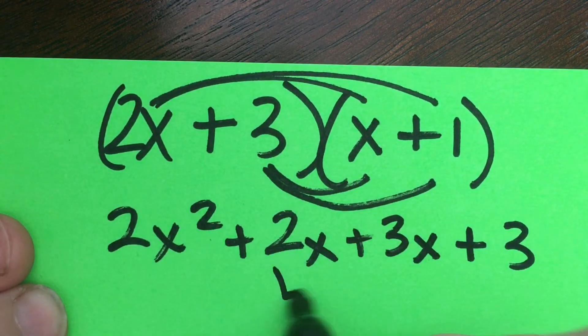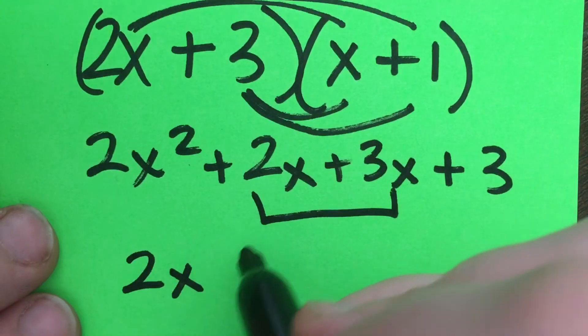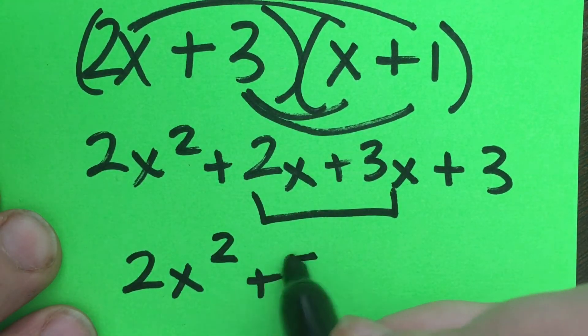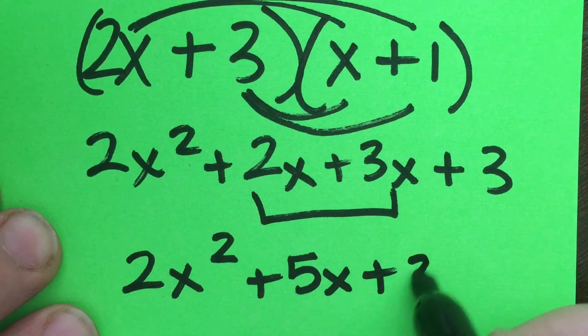Combining like terms now, I have 2x squared plus 5x plus 3.